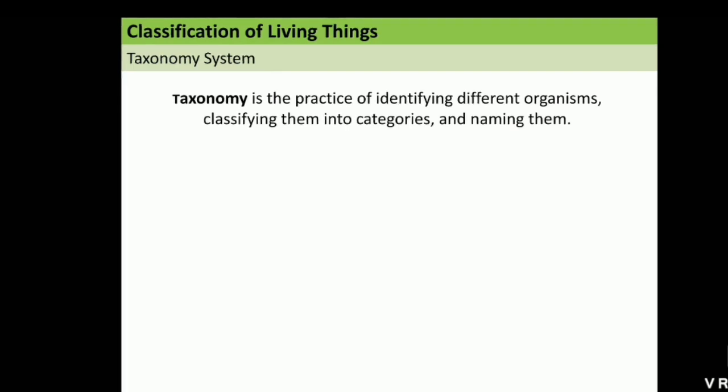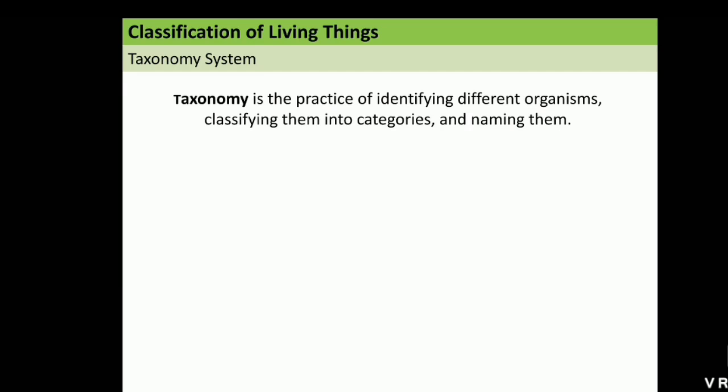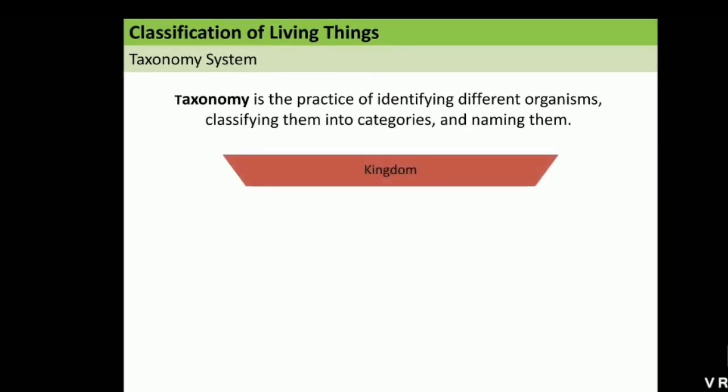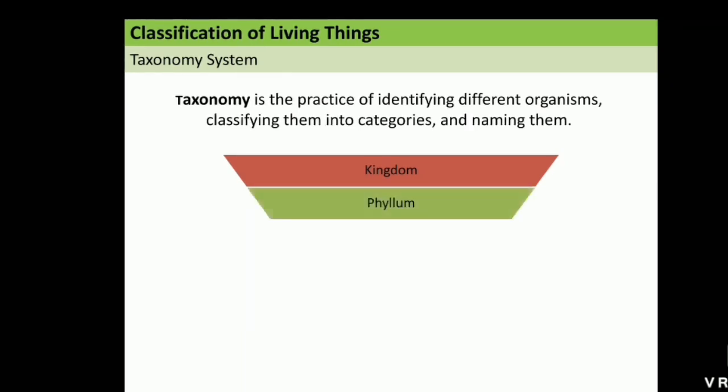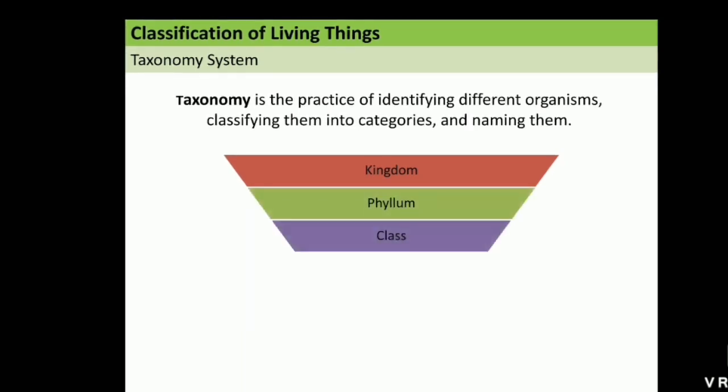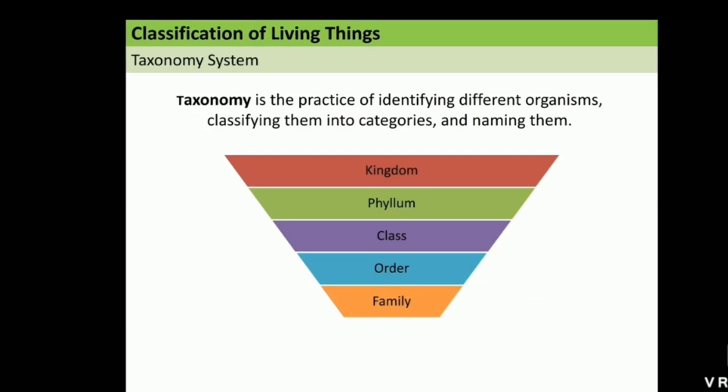Let's talk first about taxonomy system. Taxonomy is the practice of identifying different organisms, classifying them into categories and naming them. There are seven levels of taxonomy, start from kingdom, phylum, class, order, family, genus, and species.